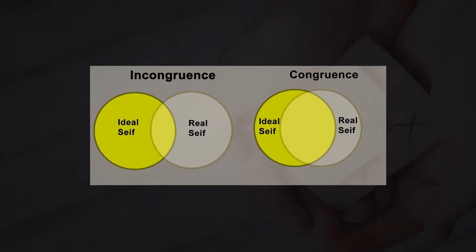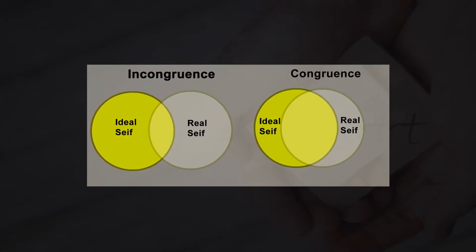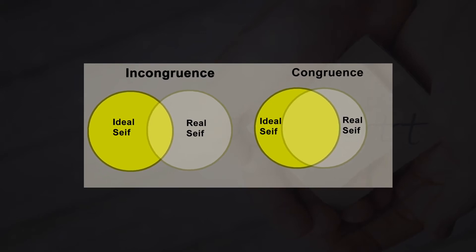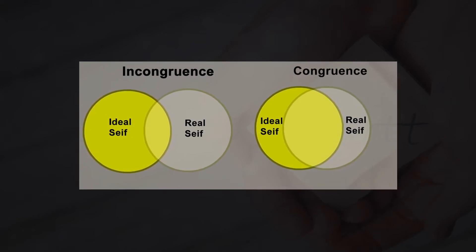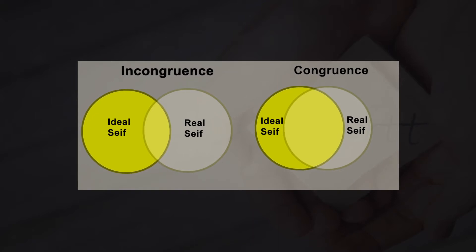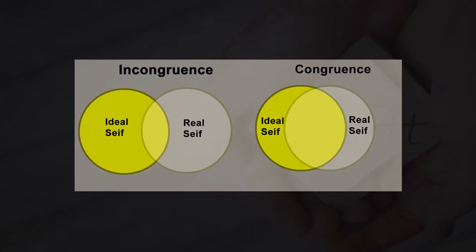Similarly, differences can occur in many dimensions of self-concept in a more or less complex way. So, the gap between ideal and real self increases — what we point out as incongruence. Conditional positive regard and the organismic valuing process are two important contributors to this incongruence. Unconditional positive regard can allow the individual to be free in their choices and leads to congruence.